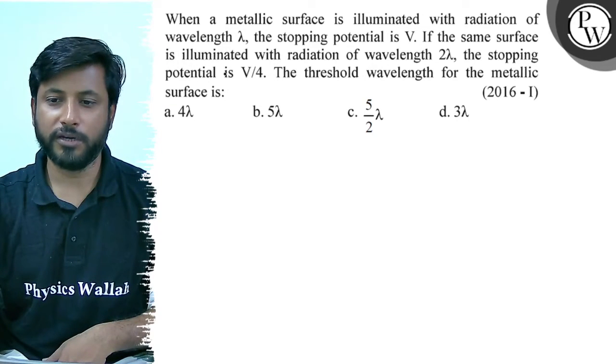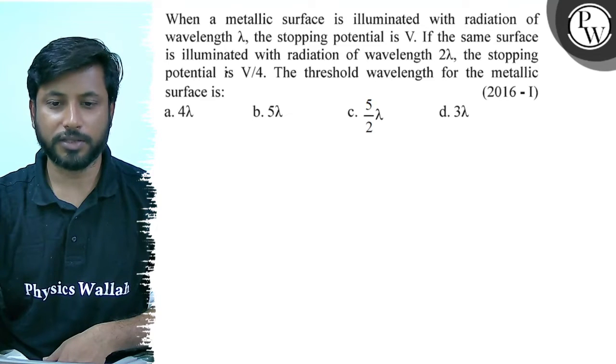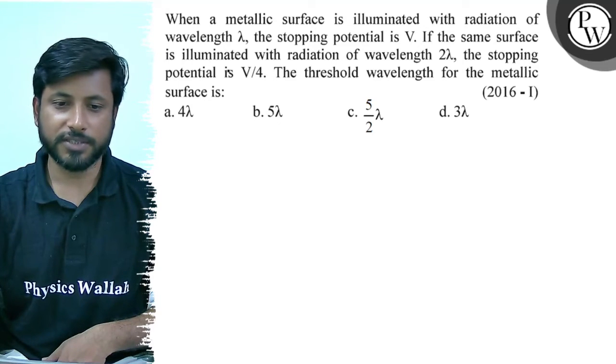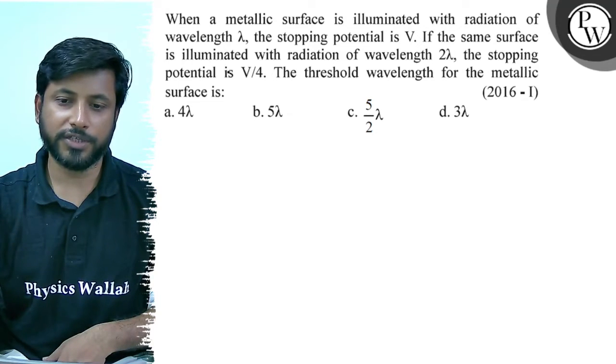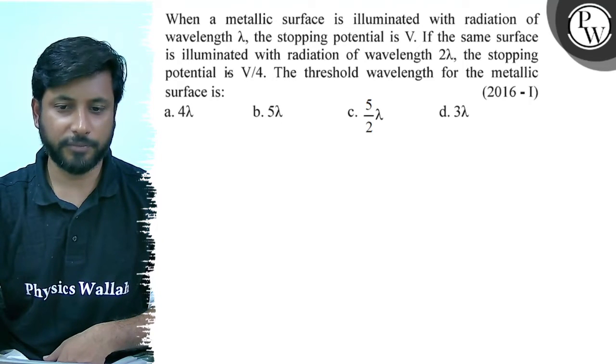When a metallic surface is illuminated with radiation of wavelength lambda, the stopping potential is V. If the same surface is illuminated with radiation of wavelength 2 lambda, the stopping potential is V by 4.